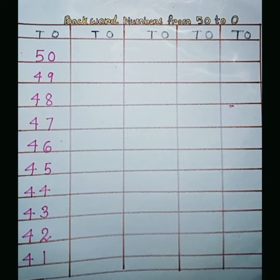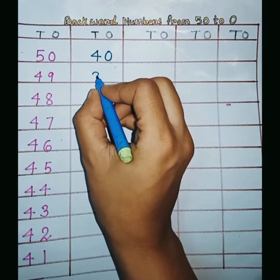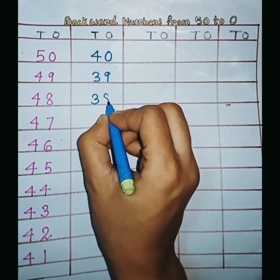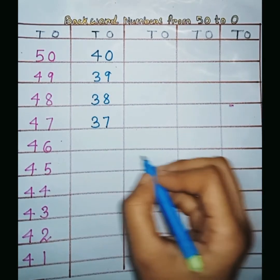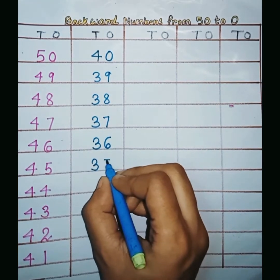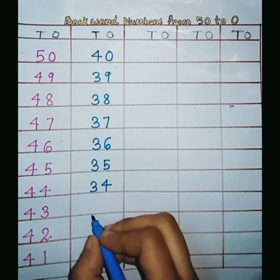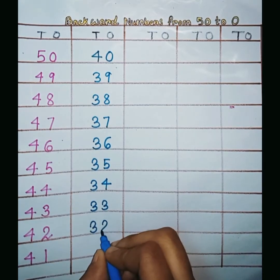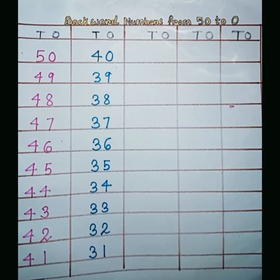we write 40. 40, 3, 9, 39. 3, 8, 38. 3, 7, 37. 3, 6, 36. 3, 5, 35. 3, 4, 34. 3, 3, 33. 3, 2, 32. 3, 1, 31. Next,